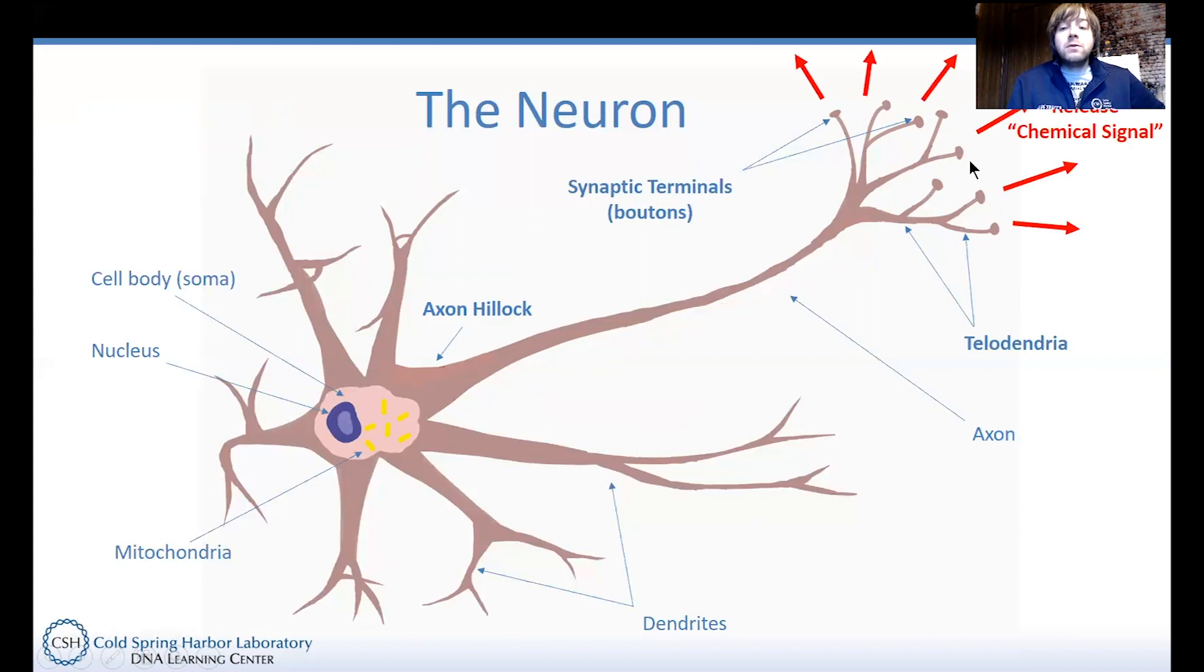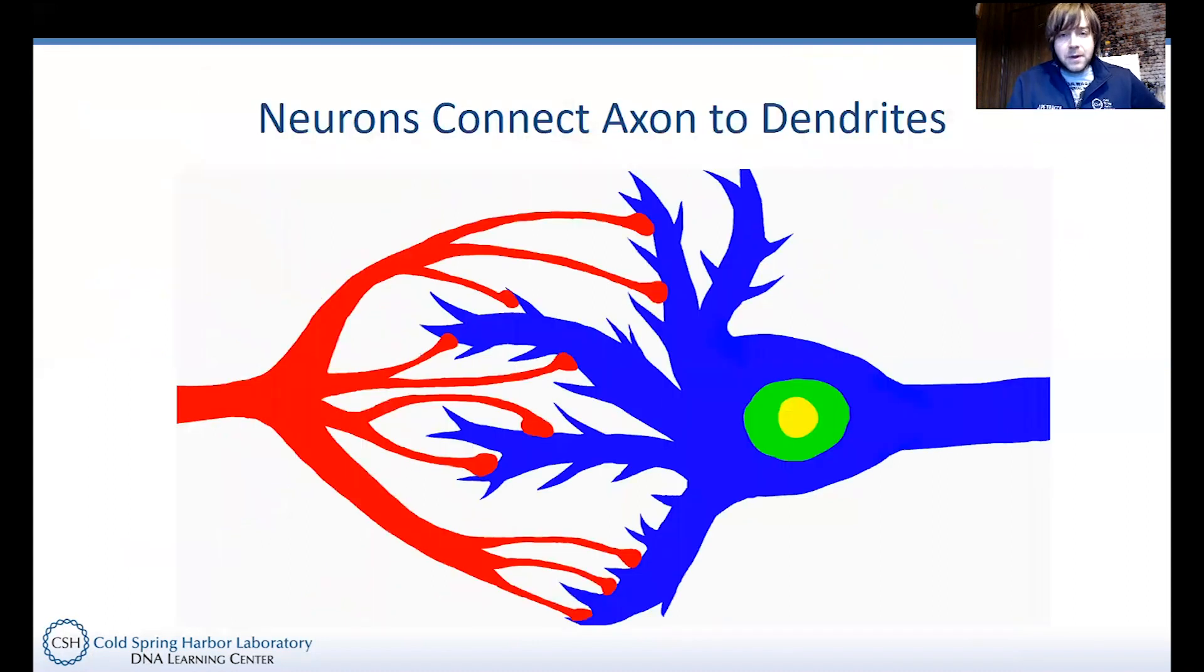Once that electrical signal reaches the synaptic terminals, that will stimulate those guys to release their own neurotransmitters, which will connect to either another neuron or to a muscle gland. And so that's the whole premise of how signals are sent from one neuron to another in the nervous system, basically.